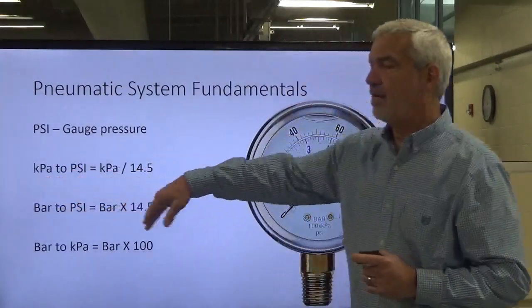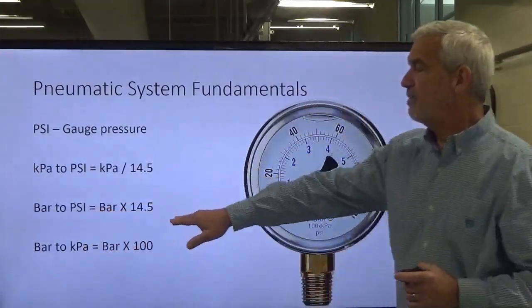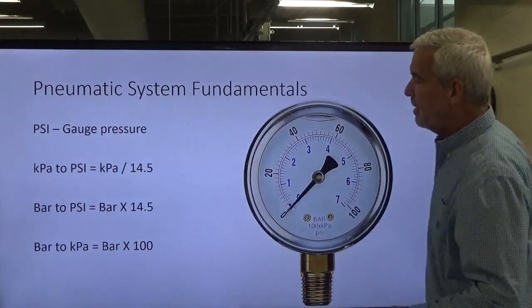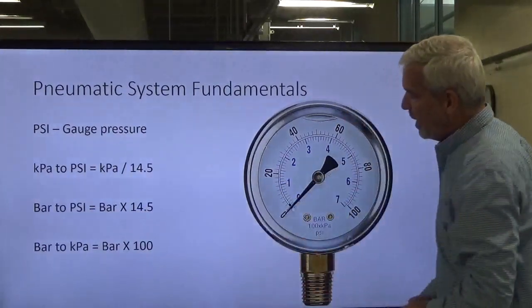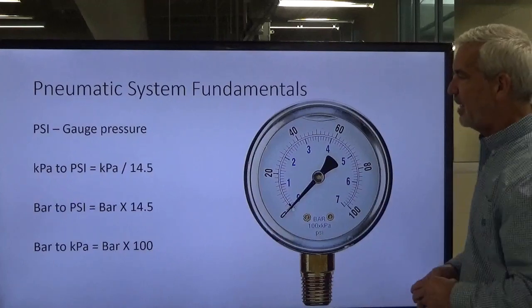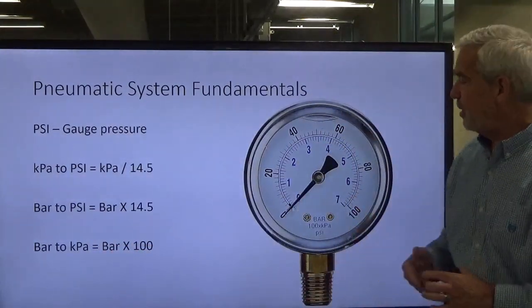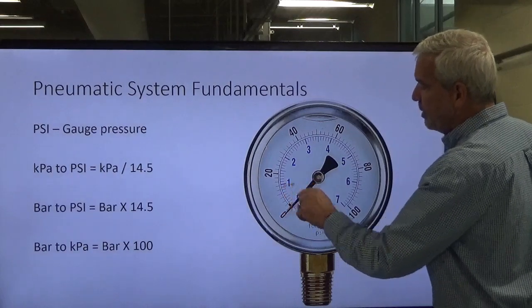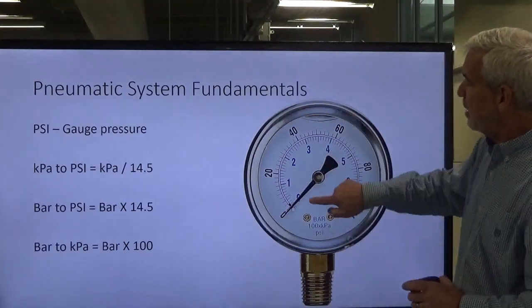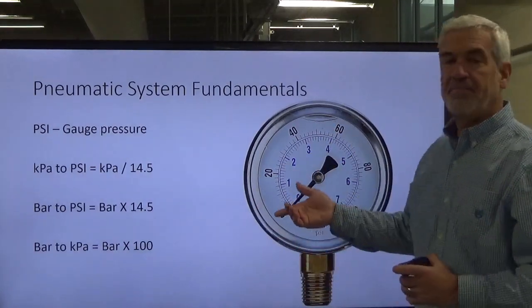Here are the conversion scales. To convert kilopascal to PSI, divide the KPA by 14.5. To get bar to PSI, multiply bar times 14.5. For example, if you had one bar, multiply one times 14.5. Bar to KPA is simply the bar times 100.